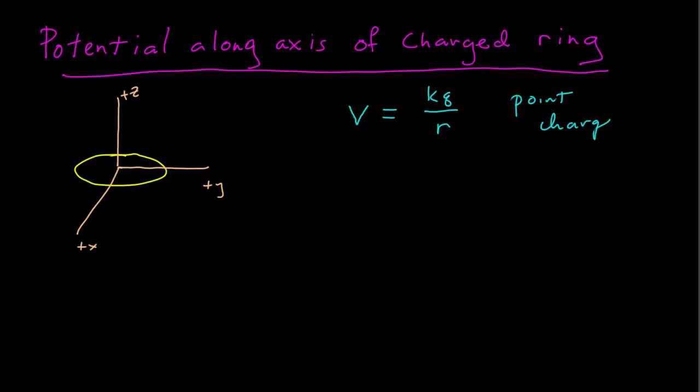And so the question is then how do we deal with a continuous object of charge like this ring? So our approach, similar to what we've done before, is we take this infinitesimal slice of charge, we call dQ.